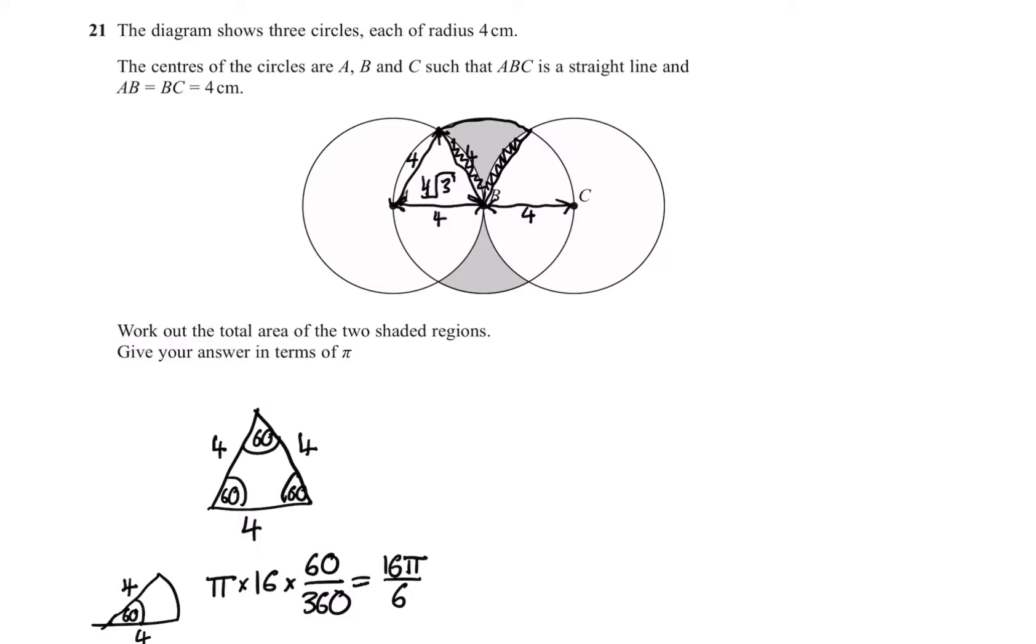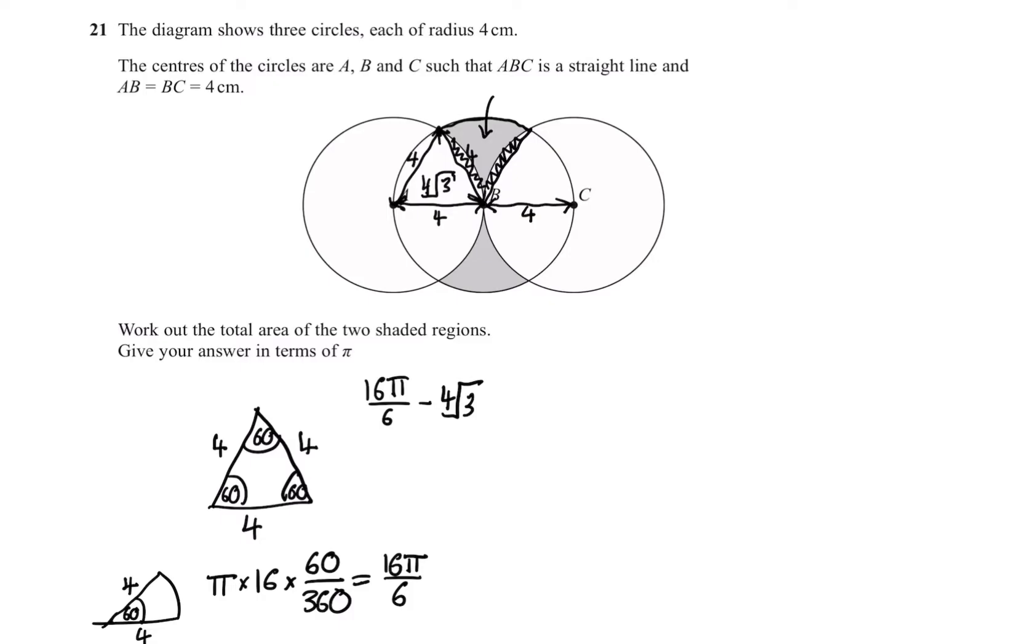Now, to find that squiggly area that I've highlighted, we just do what I said, which is subtract the two areas. So we do 16 pi over six minus four root three. To find this area, we're going to have to subtract two lots of those squiggly areas. So we're just going to double this whole thing. So we're going to get 16 pi over three minus eight root three as the squiggly area.